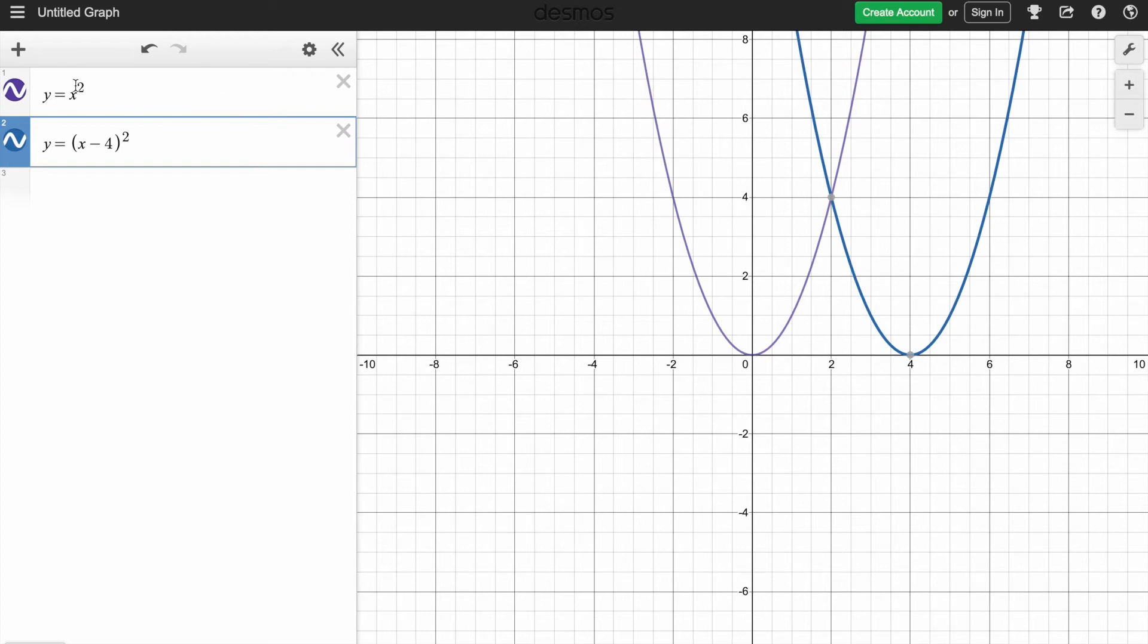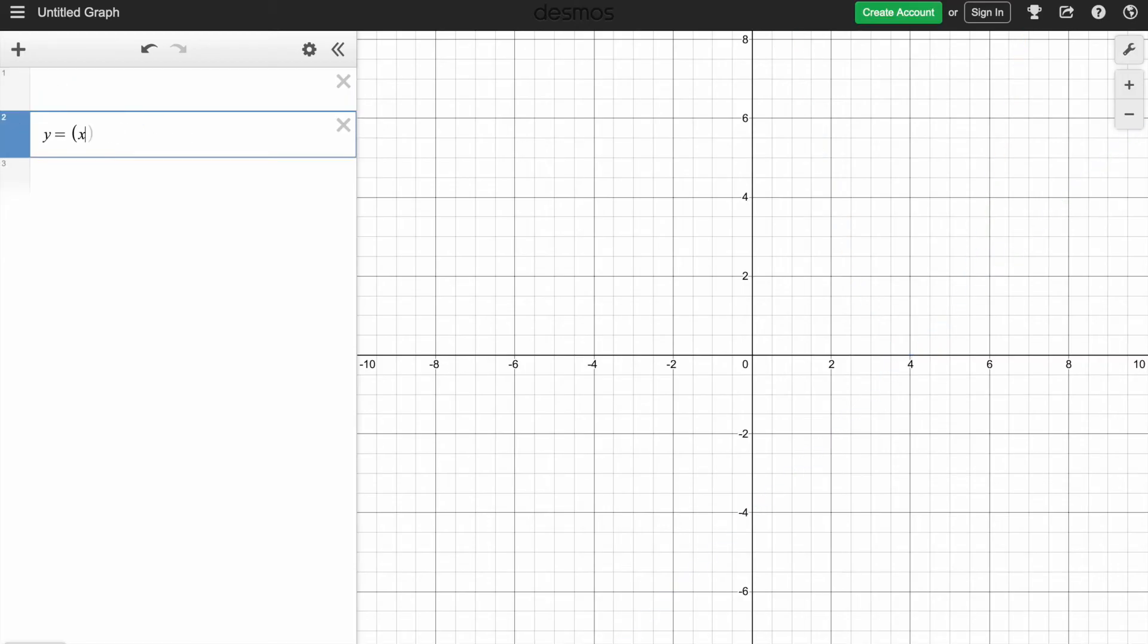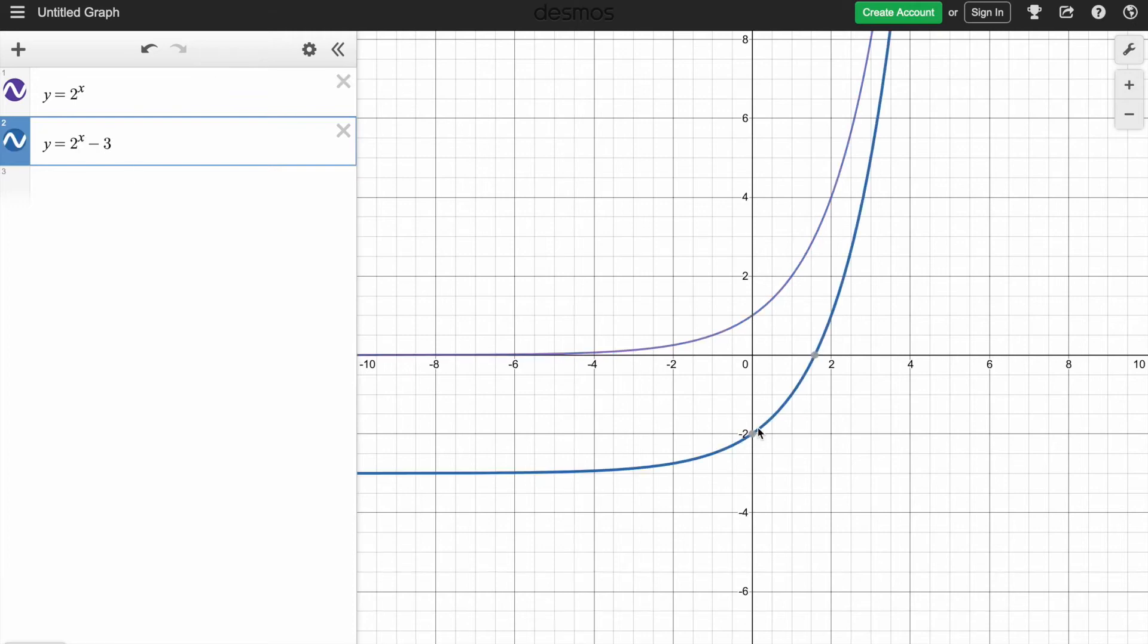If you want to do exponential graph, let's look at exponential. So you'll say y equals 2 to the exponent x. So here's your exponential graph. And if you want to move it up and down, you'll say y equals 2 to the exponent x, let's move it down minus 3. So you can see that your function came down.